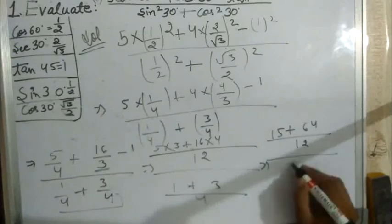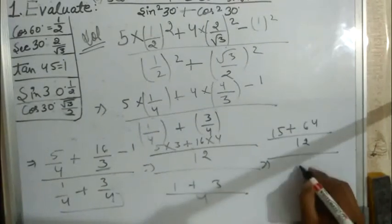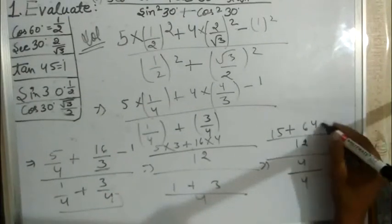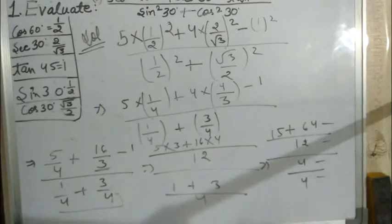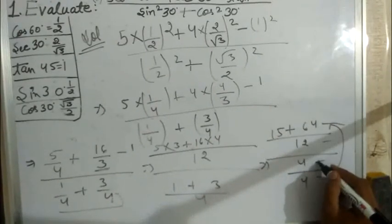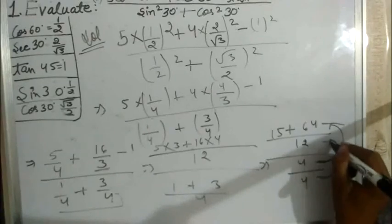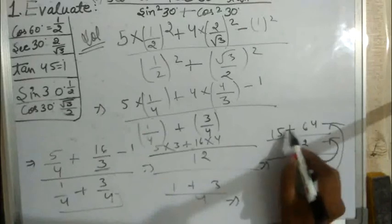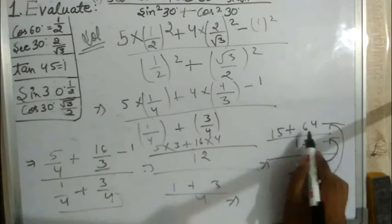3 plus 1 is 4 upon 4. Now 4 will cancel. This is the denominator, so first we add.